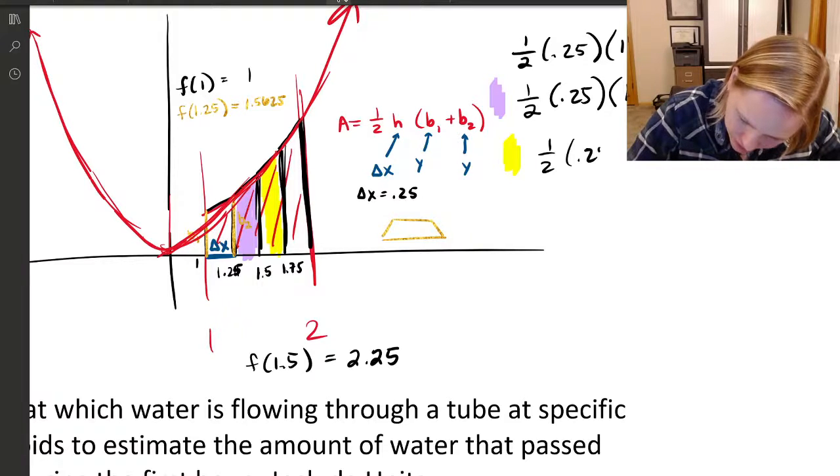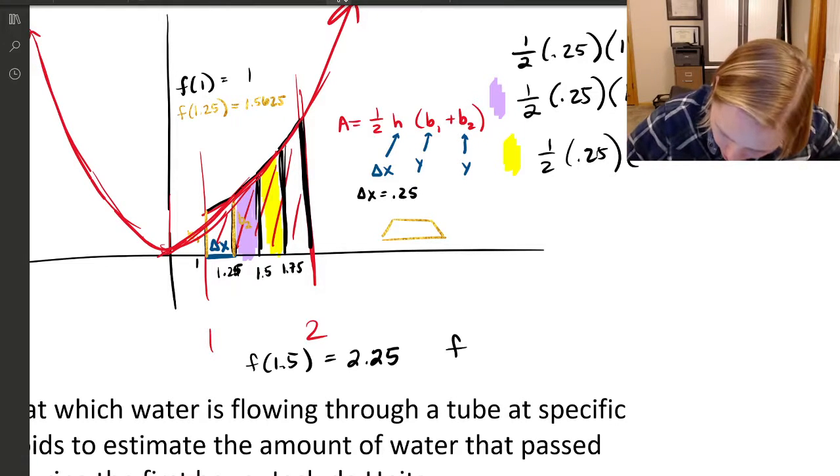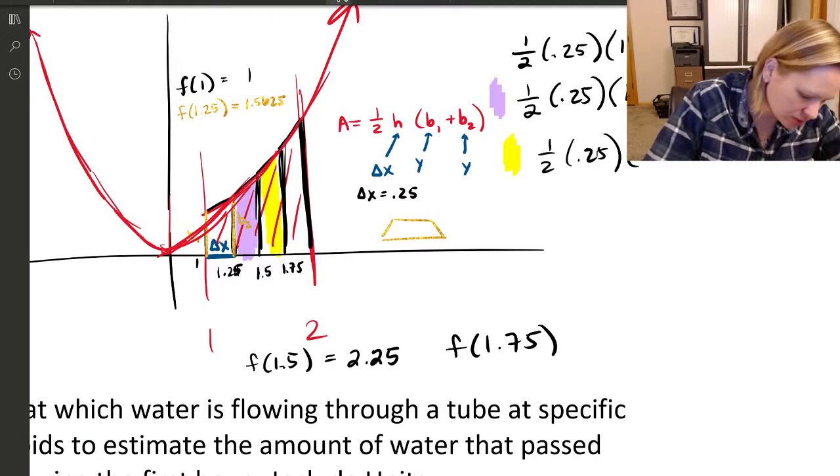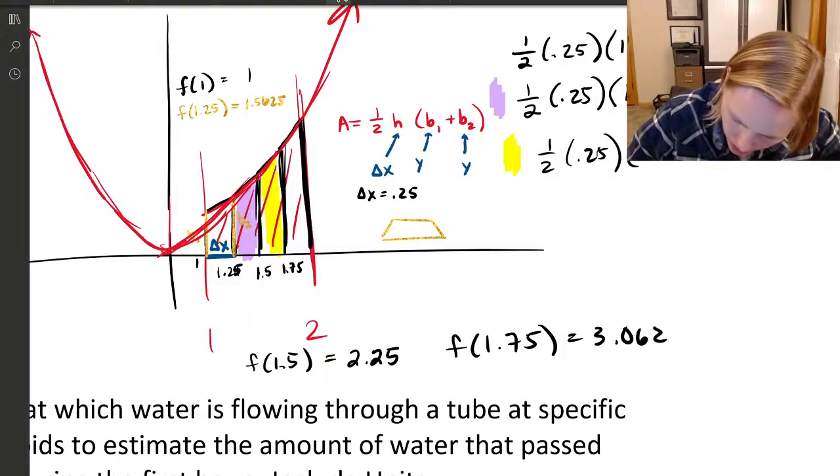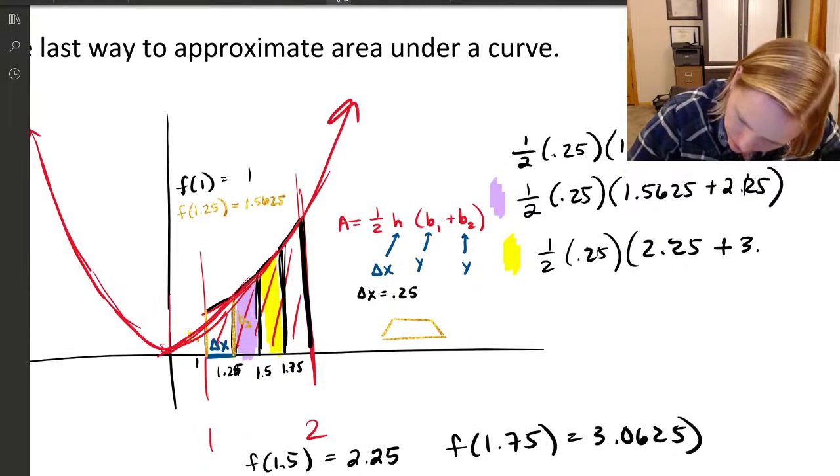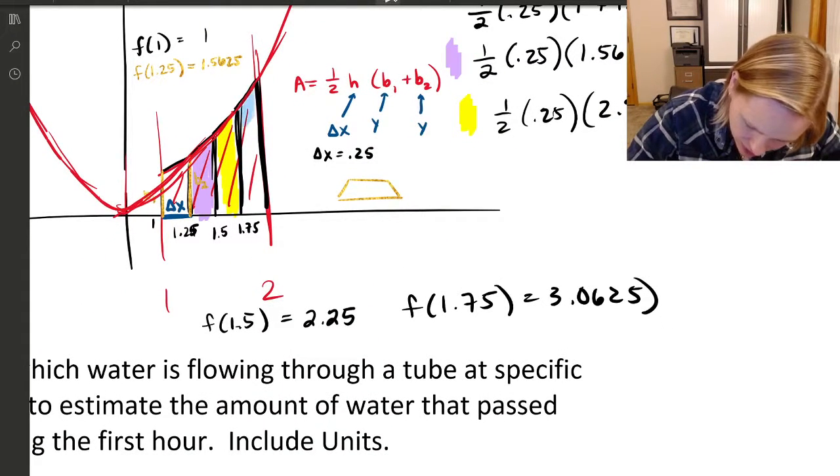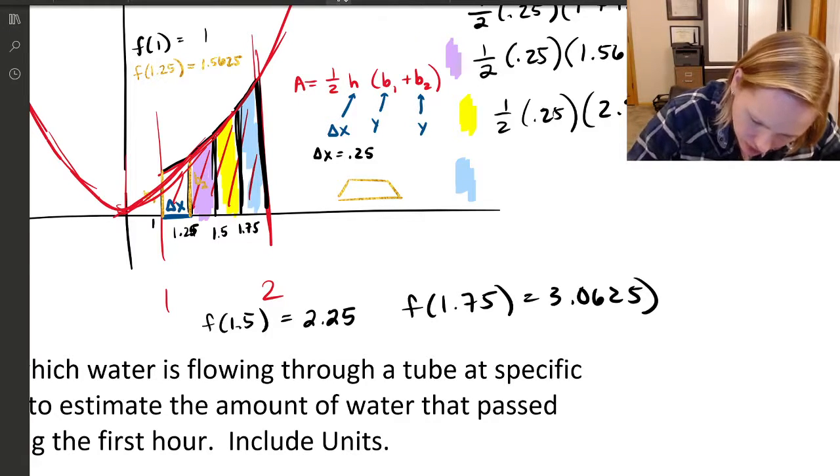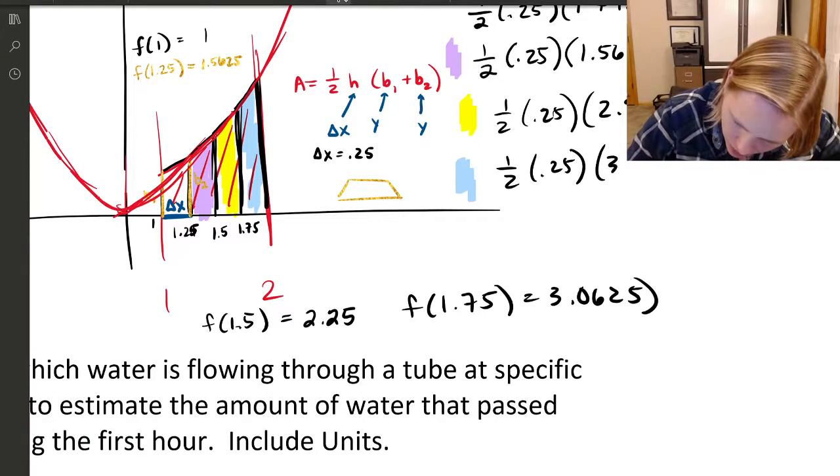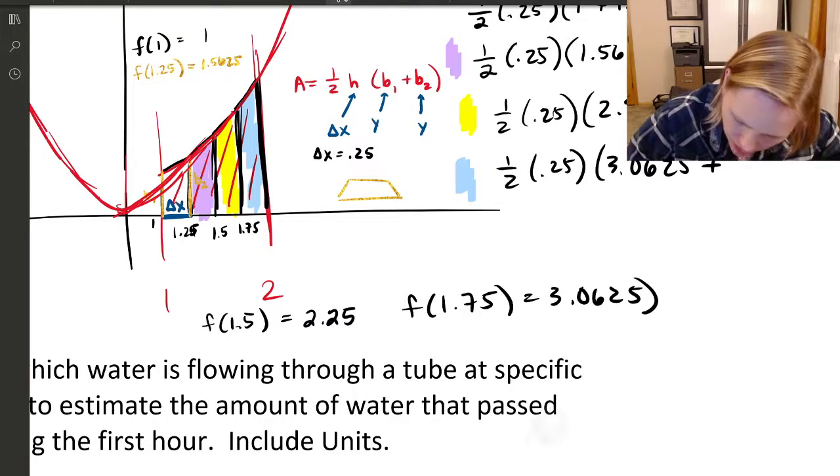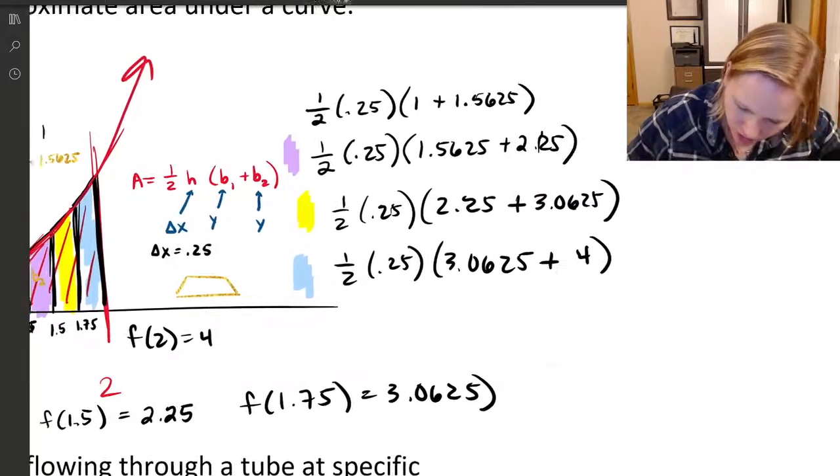Now let's do this yellow trapezoid. It's going to be one half times 0.25. 2.25 is b1. And now I need to find b2, f of 1.75, which is 1.75 squared, 3.0625. And then my last trapezoid is this blue trapezoid. One half times 0.25 times 3.0625 plus f of 2 is just 4.